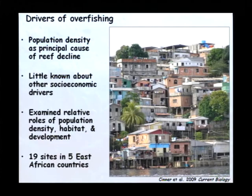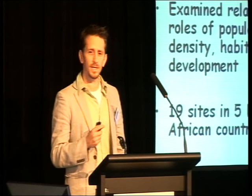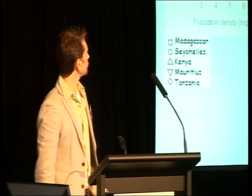We looked at 19 fish sites across Kenya, Tanzania, Madagascar, Seychelles, and Mauritius, which represents an incredible spectrum of socioeconomic development and population densities. Consistent with a number of other studies, we found that human population density did have a significant but somewhat weak relationship to reef fish biomass.